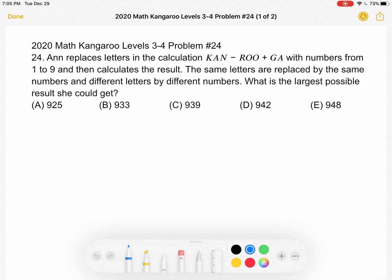The same letters are replaced by the same numbers, and different letters by different numbers. What is the largest possible result she could get? A, 925,